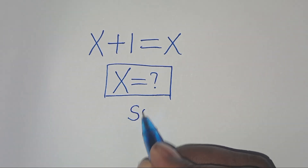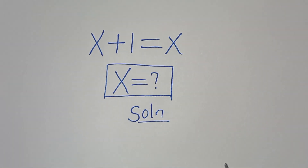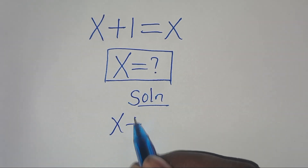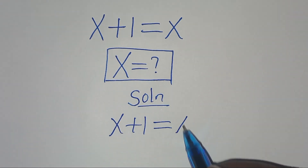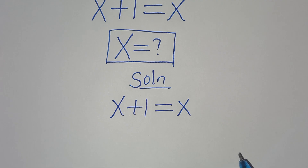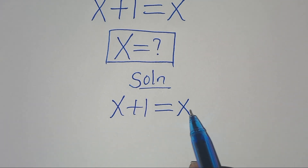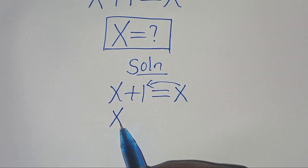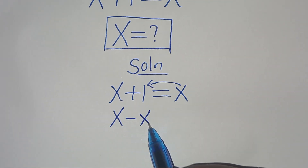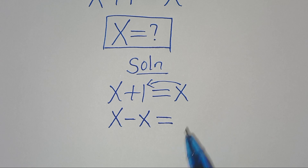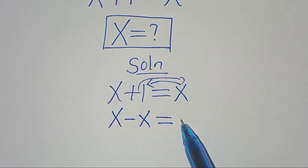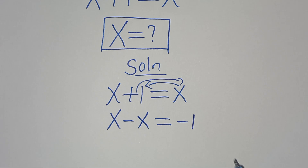Now, let's provide a solution here. We have x plus 1, this is equal to x. By checking this equation, let's take x on the left-hand side, so that we have x minus x, this is equal to plus 1. If you take plus 1 on the right-hand side, this becomes minus 1.